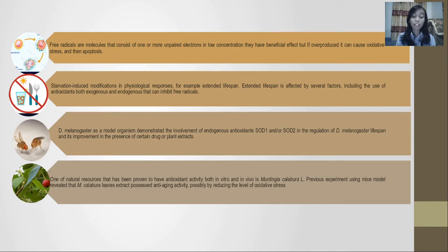These antioxidants are also available in Drosophila melanogaster, so we use the melanogaster as an animal model. One natural resource that has been proven to have antioxidant activity, both in vitro and in vivo, is Muntingia calabra.